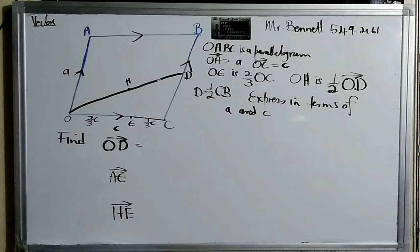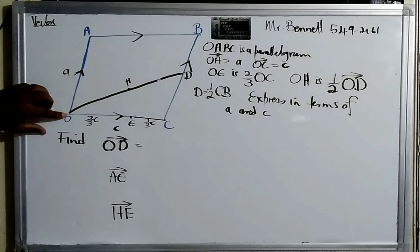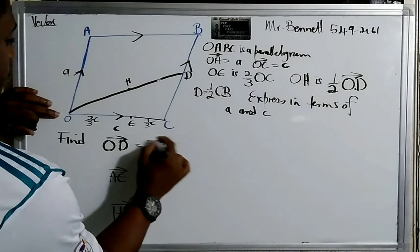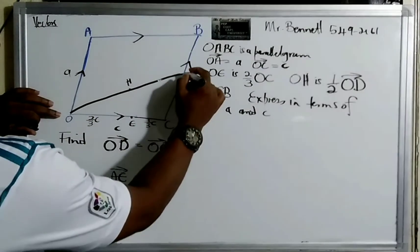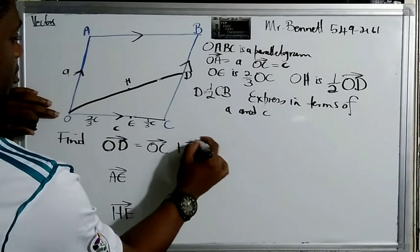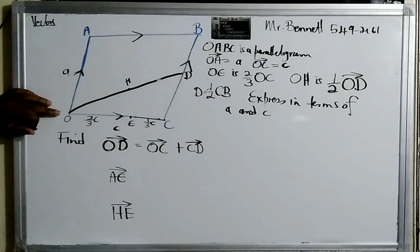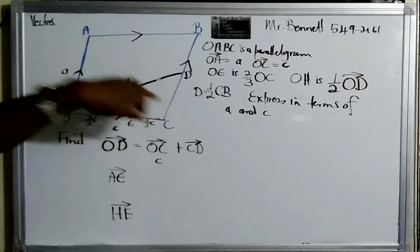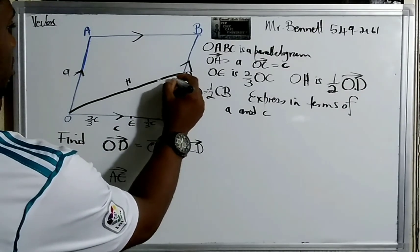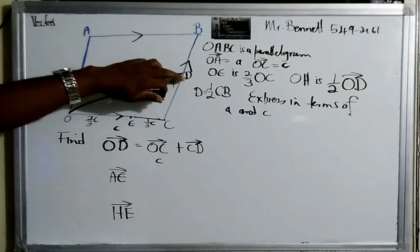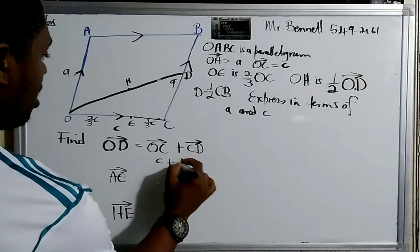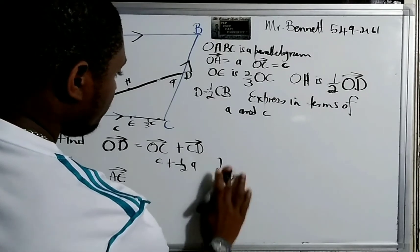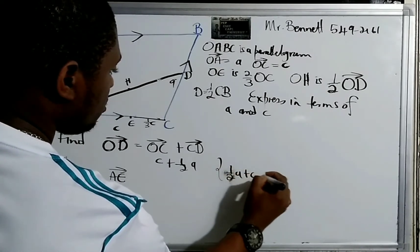From O to D, we can say OD equals OC plus CD. OC was given, which is c. Now CB is equal to a — it's the opposite side — but we're only going halfway, so CD is half of a. Therefore OD equals c plus one-half a, or equivalently one-half a plus c.